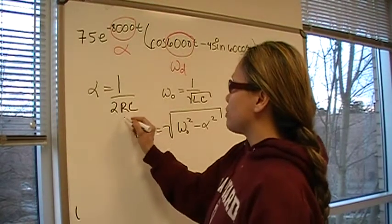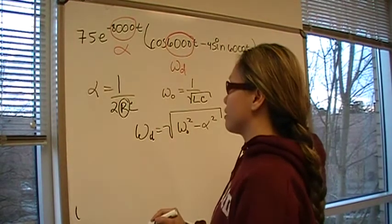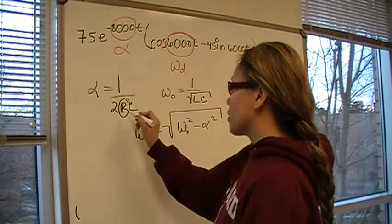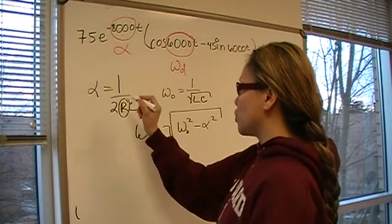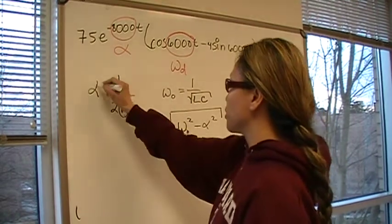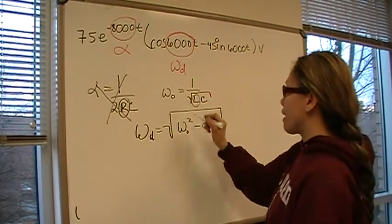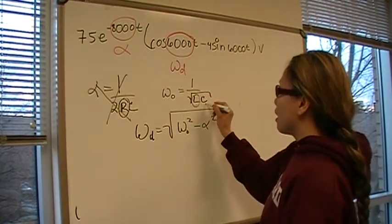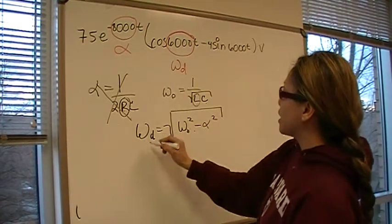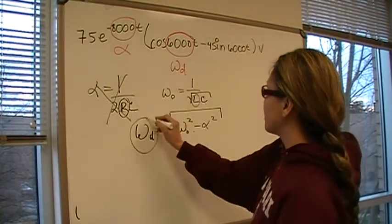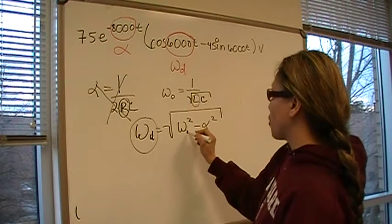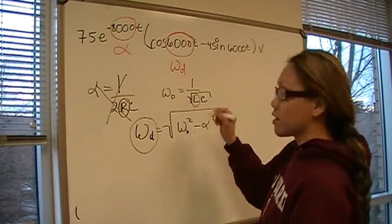This equation isn't going to help us because we currently don't know what resistance is. We don't have enough information. But we know the inductance, and omega 0 can come from the omega D equation since we know what that is, so we can solve for omega 0 and therefore solve for capacitance.